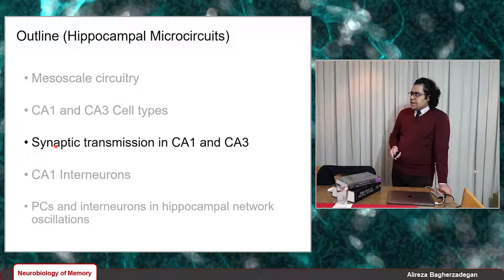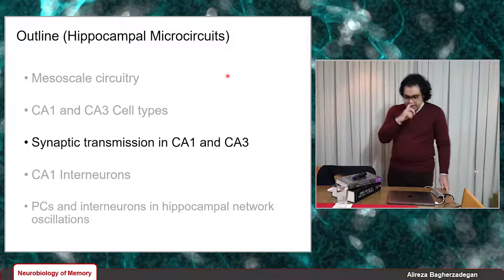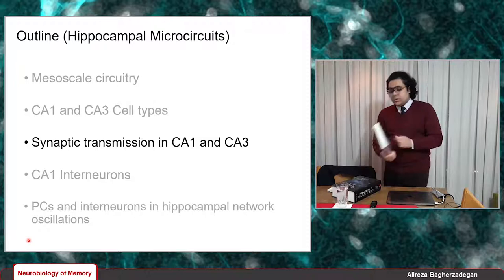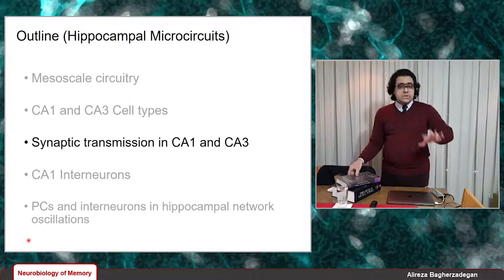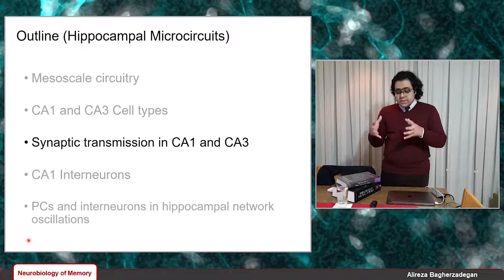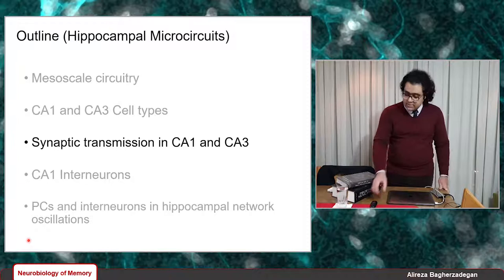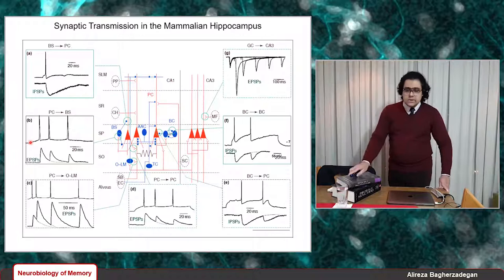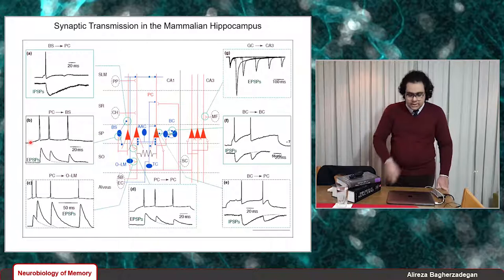Now let's talk about synaptic transmission in CA1 and CA3 microcircuits. One method to analyze any microcircuit, as proposed in the Handbook of Brain Microcircuits by Professor Gordon Shepherd and in other papers, is to identify different types of synaptic transmission in a single microcircuit. In CA3 and CA1, we have three types: excitatory-to-excitatory connections, excitatory-to-inhibitory connections, and inhibitory-to-inhibitory connections.